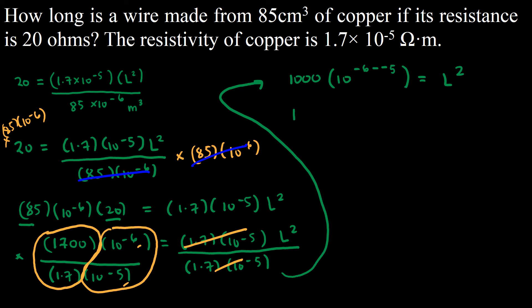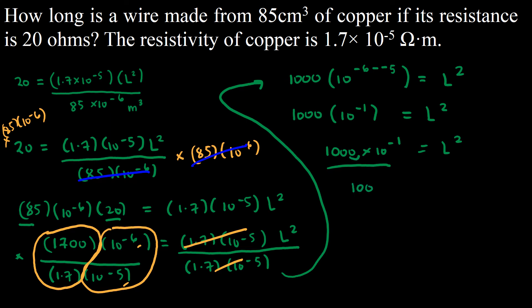So we have 1,000 times 10 raised to the power of negative 1 equals L squared. Ten raised to the negative 1 moves the decimal one place to the left, so 1,000 times 10 to the negative 1 equals 100. Therefore, 100 equals L squared.